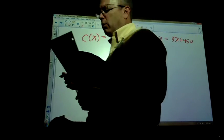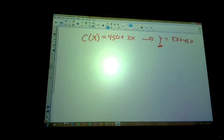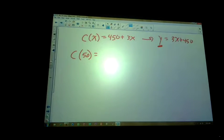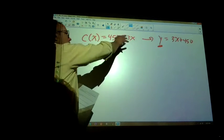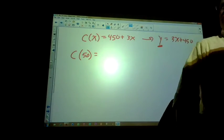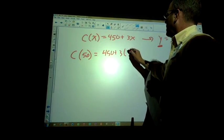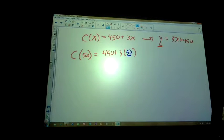So this is the cost function. Determine C(50). What do you think C(50) means in the context of the problem? We want to make 50 candles. This is the equation that costs to make candles. So I have 450 plus 3 times 50. What was right here? X. What did I replace X with? 50.